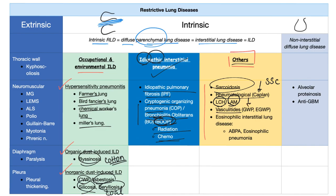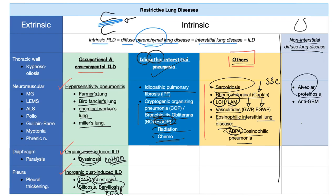Vasculitides include granulomatosis with polyangiitis, formerly known as Wegener's, and eosinophilic granulomatosis with polyangiitis, formerly known as Churg-Strauss syndrome. We also have eosinophilic interstitial lung disease such as allergic bronchopulmonary aspergillosis and eosinophilic pneumonia. The non-interstitial diffuse alveolar type includes alveolar proteinosis and anti-glomerular basement membrane antibody disease — Goodpasture syndrome — which causes hemoptysis from the lung and hematuria from the kidney.